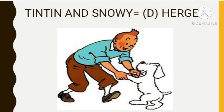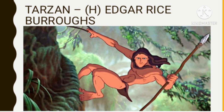The next comic cartoon is Tintin and Snowy. The creator of Tintin and Snowy is Hergé. The series was one of the most popular European comics of the 20th century. The next one is Tarzan, created by Edgar Rice Burroughs. Tarzan first appeared in the novel Tarzan of the Apes, followed by 25 sequels and several authorized books by other authors.